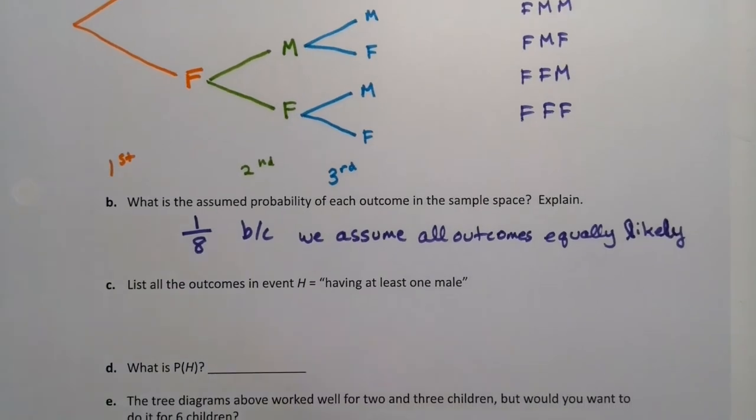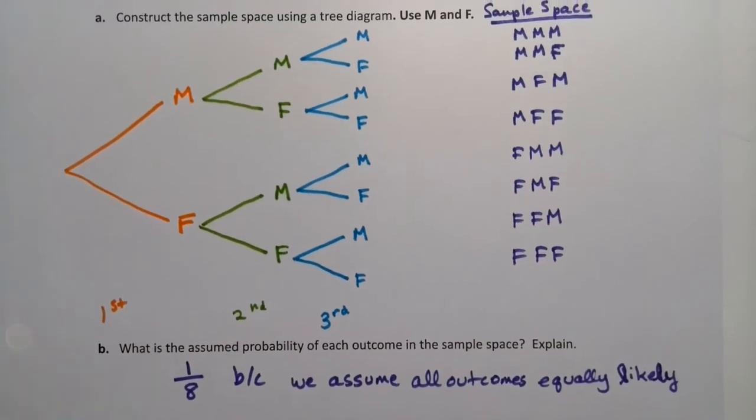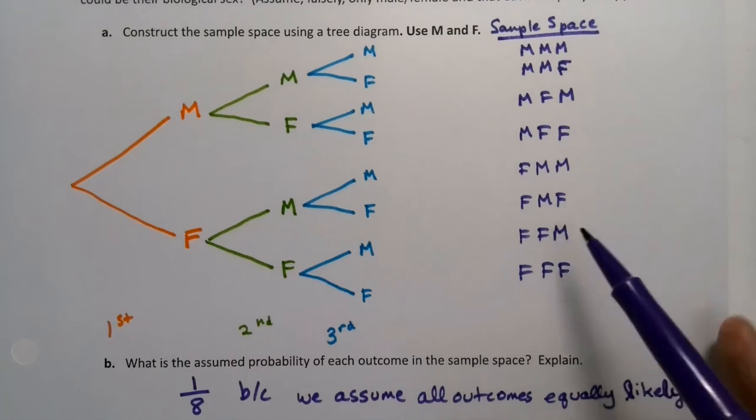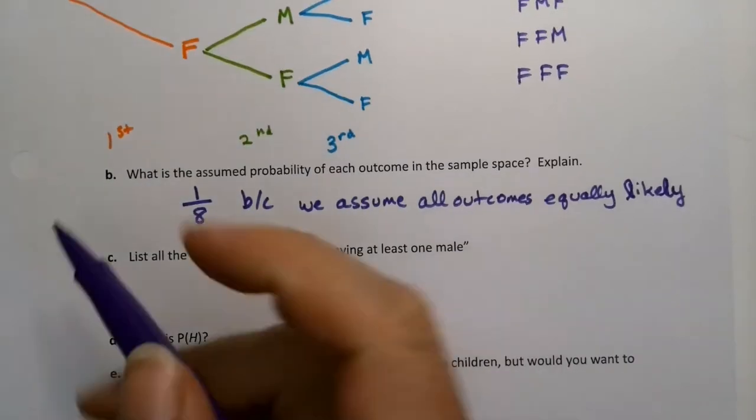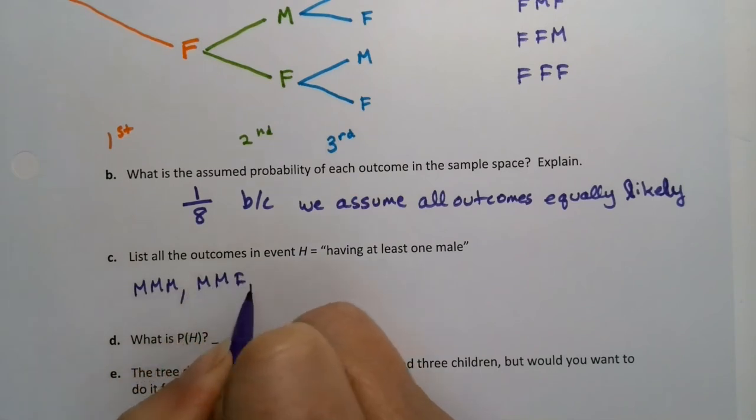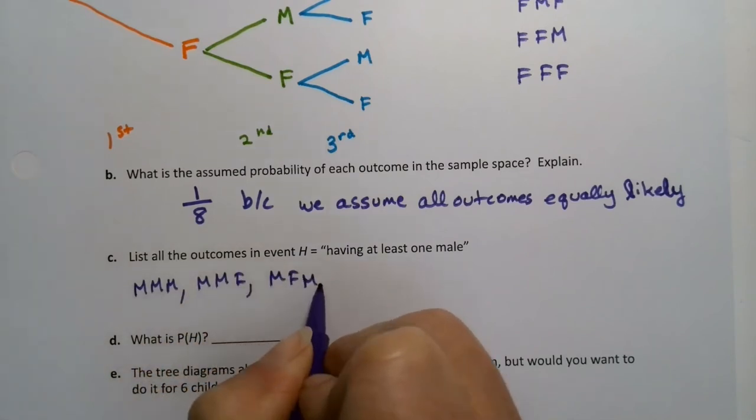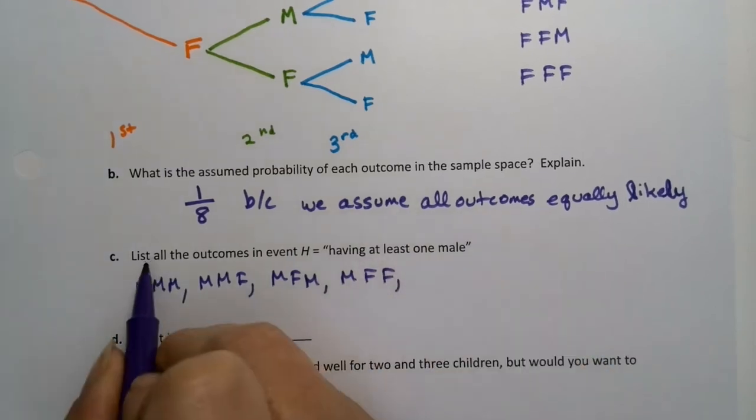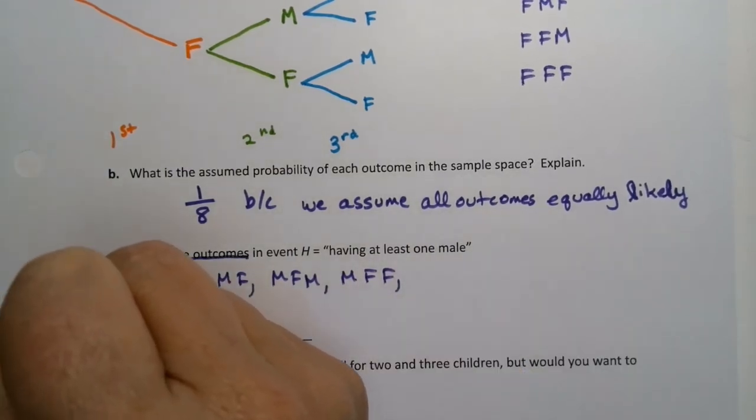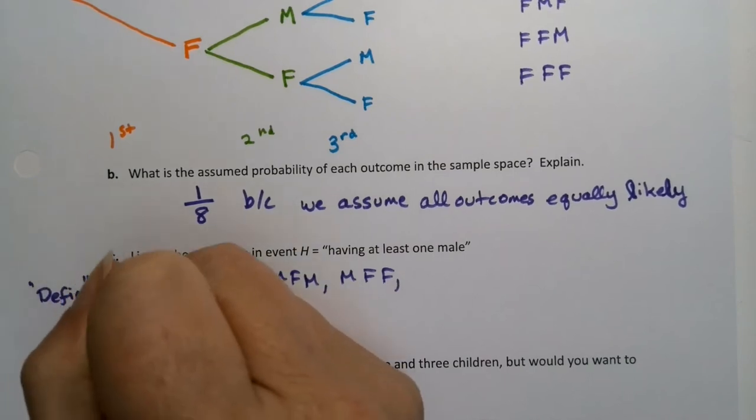Now we're going to list all the outcomes in the event H, which is having at least one male. Having at least one male is actually most of the outcomes. You have to have at least one M. So all of them, except for FFF, right? FFF won't count. So MMM, MMF, MFM, and so on. Listing all the outcomes is the same thing as define, right? When you define, it means you're making the list.